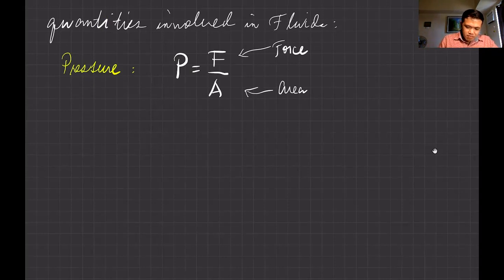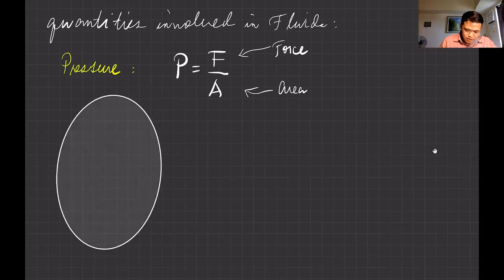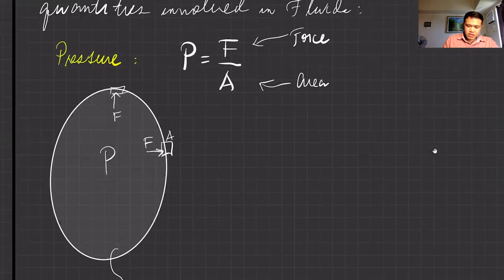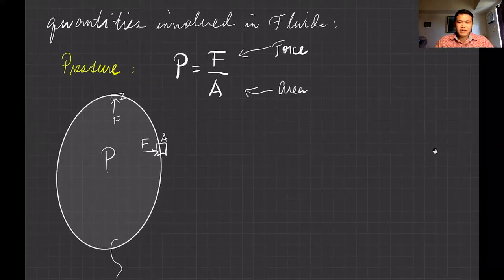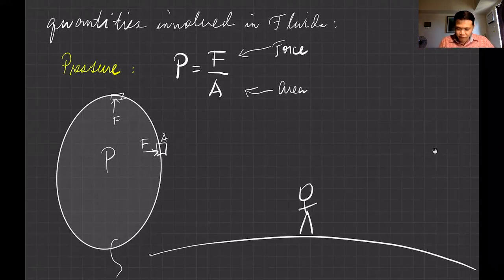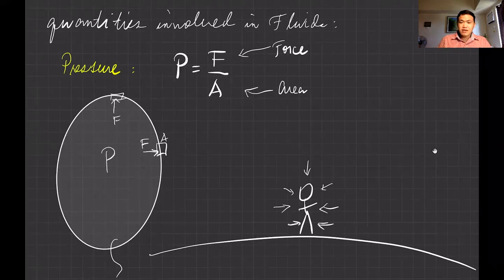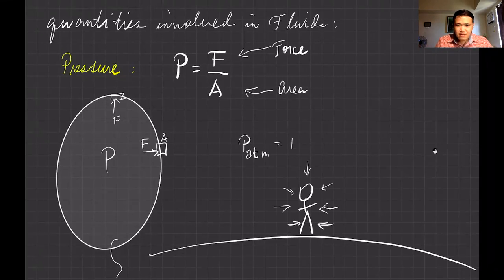In a fluid, such as inside a balloon, the pressure is the perpendicular force exerted on a given area. Whether swimming or in the atmosphere, the force per unit area — the pressure — is always perpendicular to the surface of the body. This is what we call atmospheric pressure.